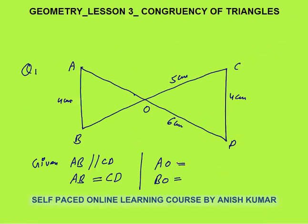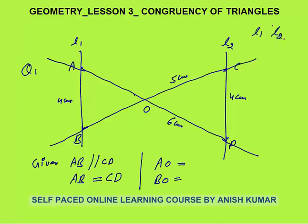Now let's discuss questions based on congruency. Question 1: AB is parallel to CD, and AB equals CD. Try to pause the video and solve it yourself before looking at the solution. AB and CD are parallel lines, and BC is a transversal cutting them, making L1 parallel to L2.